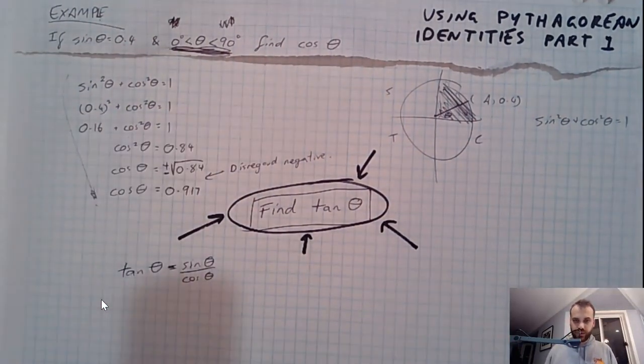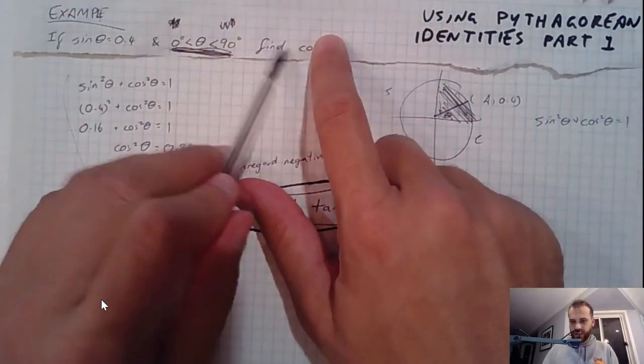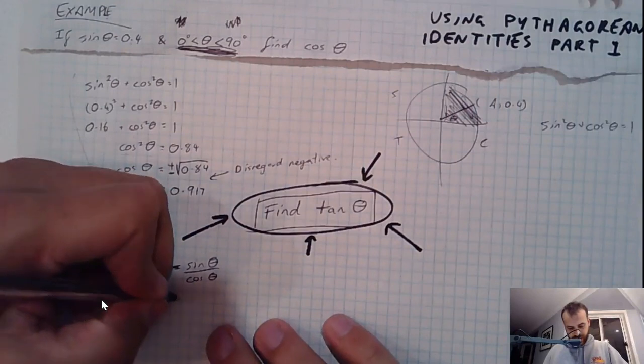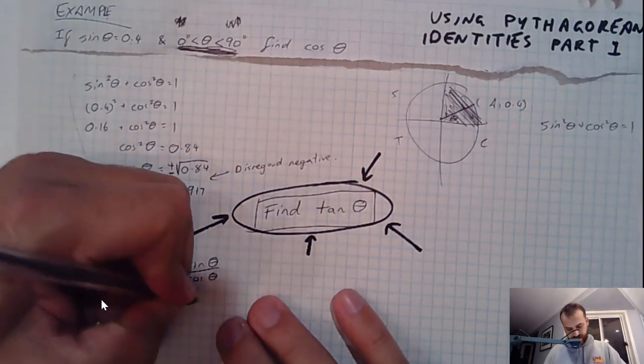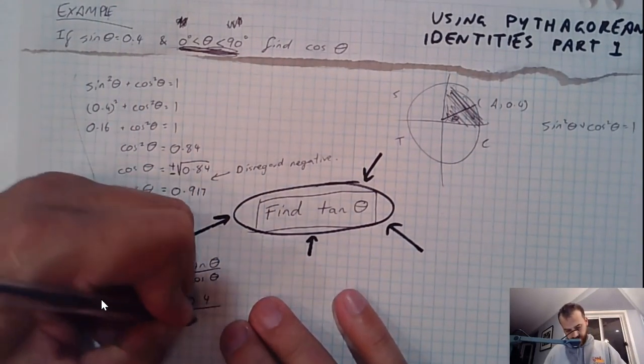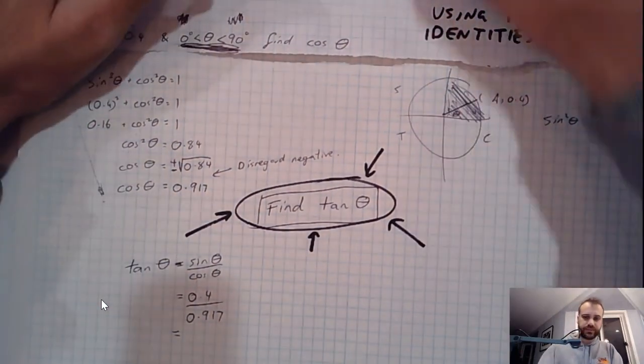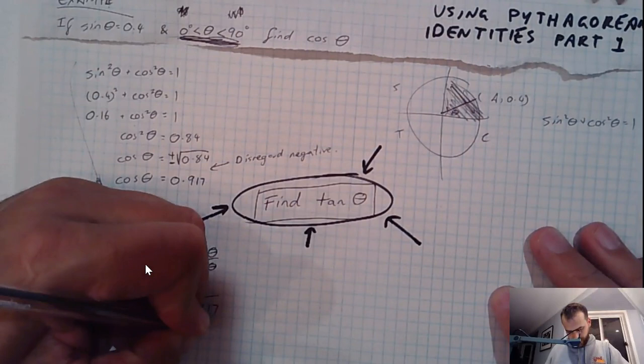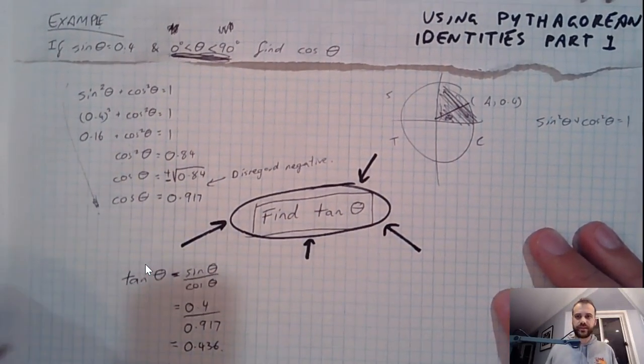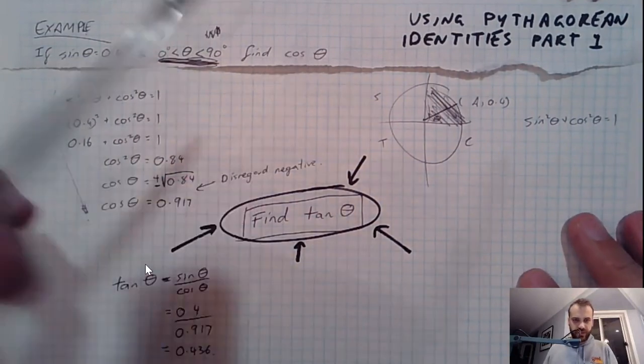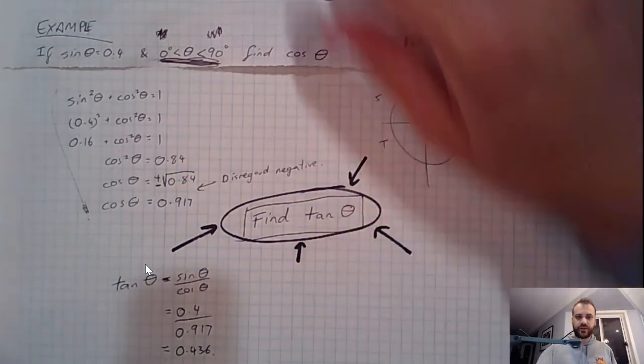So if you're ever asked a question like this, it's pretty straightforward. If you know one, you can find the other using Pythagorean identity, and then you can just sub in your two answers, 0.4 over 0.917, and now we'll know tan theta, and that's 0.436. Okay, that's using the Pythagorean identity. If you know one of them, you can find the other two.